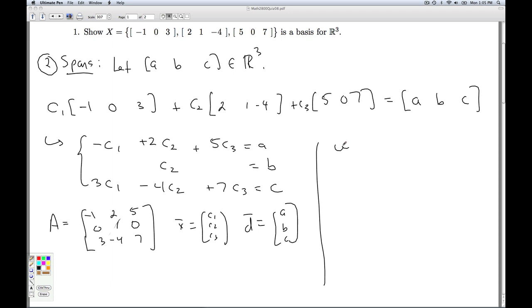So we know from before the determinant of A is not zero. That means that A is invertible, which means there is a solution to Ax = D for every choice of D.